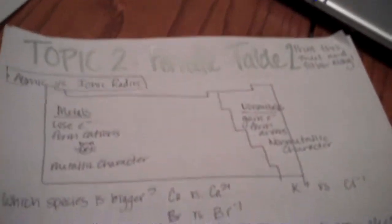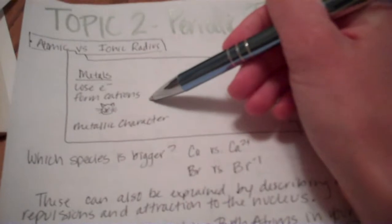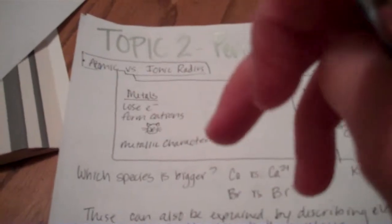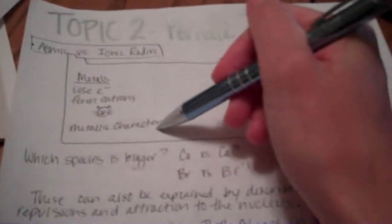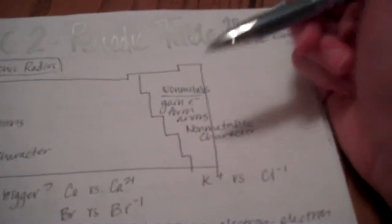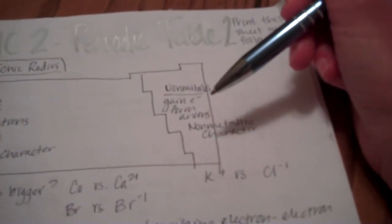Okay, next up, number two. So, we have atomic versus ionic radius. So, metals, again, are on the left side of your periodic table. They tend to lose electrons and form cations. And remember, cations are positive. Positive. See the clause? All right. So, the ability to lose an electron is called metallic character. Non-metals, on the other hand, gain electrons. When they gain electrons, they form anions. And the ability to gain an electron is called your non-metallic character.